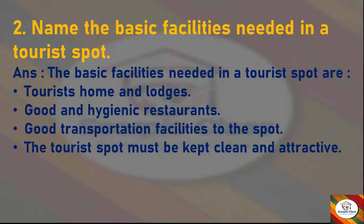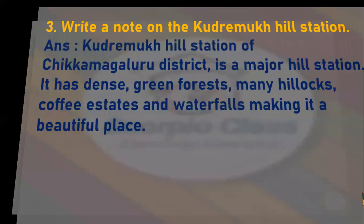The basic facilities needed in a tourist spot are: tourist homes and lodges, good and hygienic restaurants, good transportation facilities to the spot, and the tourist spot must be kept clean and attractive. So these are the basic facilities needed in a tourist spot.